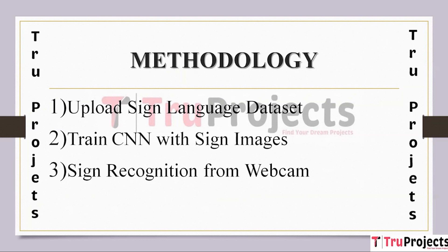The second module is training a CNN with sign images. Convolutional Neural Networks (CNNs) are a class of deep learning models particularly well suited for image-related tasks including image classification. In this module we use a CNN architecture to train a model for sign language recognition. The steps include data pre-processing: preparing the dataset by resizing images to a consistent size, normalizing pixel values, and splitting data into training and validation sets. The model architecture comprises convolutional layers, pooling layers, and fully connected layers, which are adept at capturing spatial patterns in images.